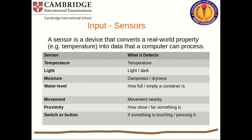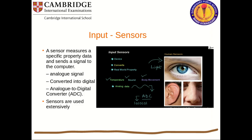A sensor is a device that converts real-world properties — for example, temperature — into data that a computer can process. Different sensors have different detections: temperature sensors detect temperature, light sensors detect light and dark, moisture sensors detect dampness and dryness, water level sensors detect how full or empty a container is, movement sensors detect motion nearby, proximity sensors detect how close something is, and switch or button sensors detect if something is pressing them.